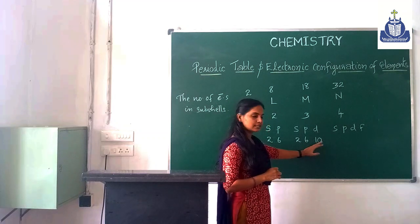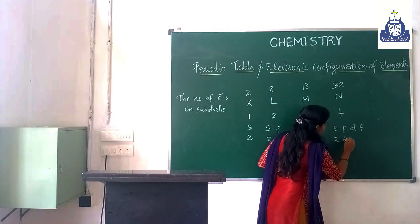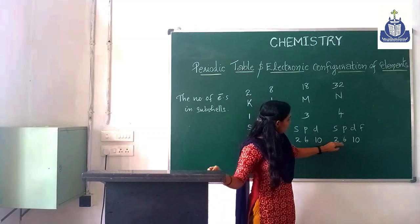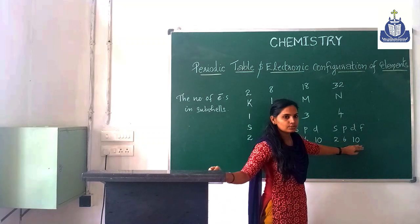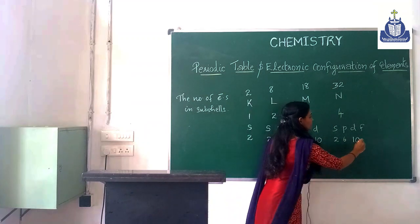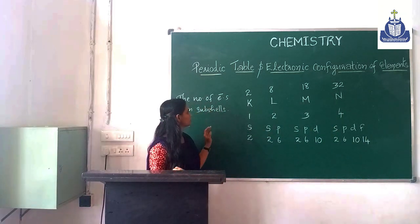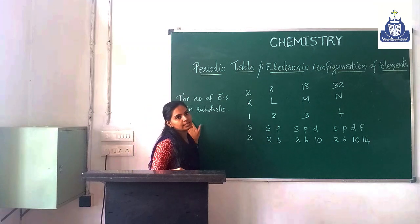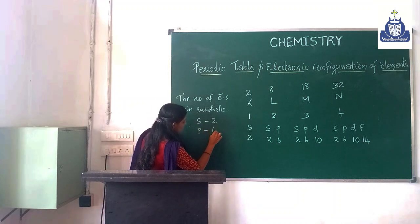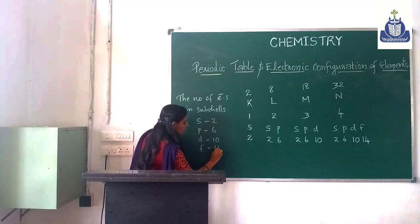The D subshell holds 10 electrons. For the N shell, with a maximum of 32 electrons: S holds 2, P holds 6, D holds 10, total 18. So 32 minus 18 equals 14, meaning F subshell holds 14 electrons. To summarize: S subshell holds 2 electrons, P subshell holds 6 electrons, D subshell holds 10 electrons, and F subshell holds 14 electrons.